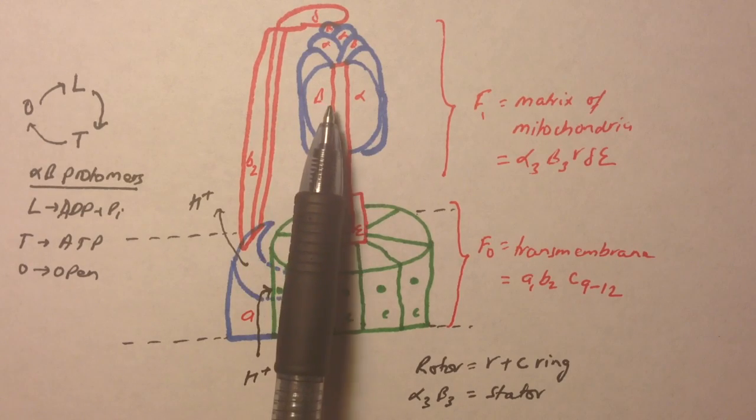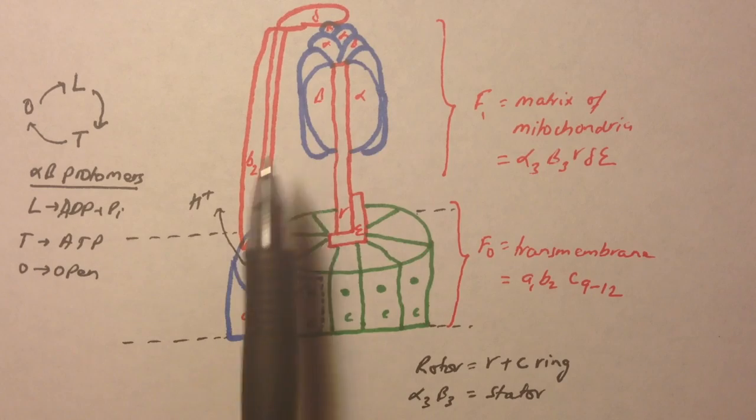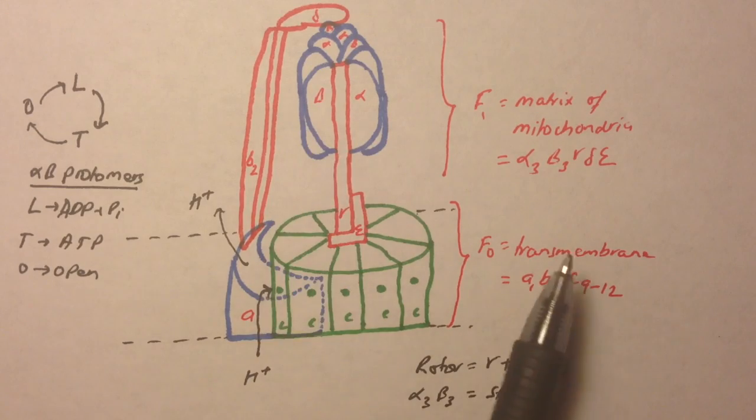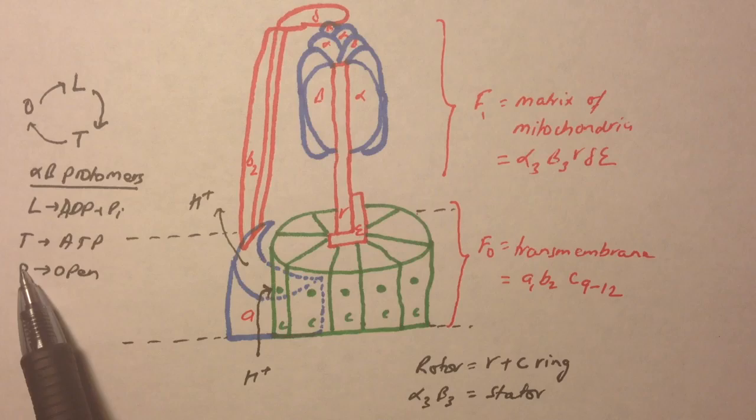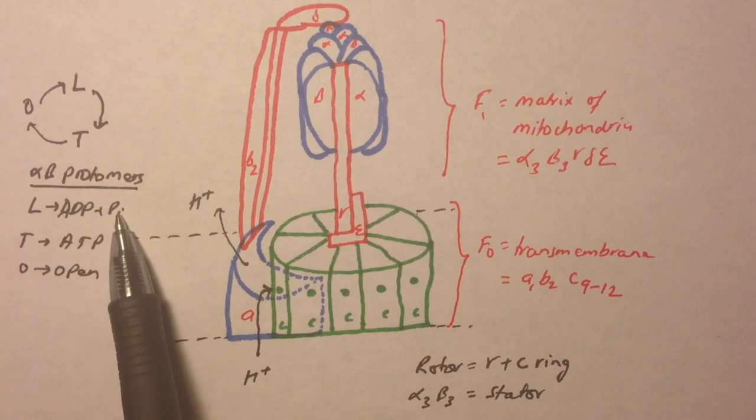Then the ATP, this T side, converts into O side and the ATP leaves. And when it rotates again, the O side changes into L side, and this is ready to be bound to ADP and Pi again.